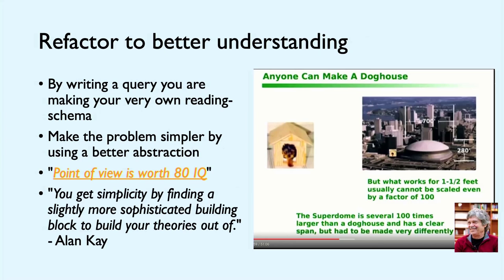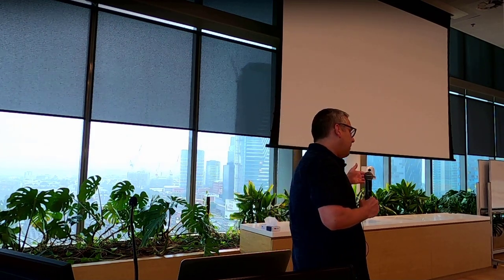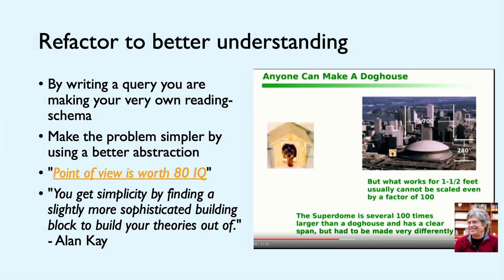Alan Kay is attributed with the quote 'A point of view is worth 80 IQ points' — not because you change your perspective and suddenly become smarter, but it allows you to do things on a completely different meaningful level. In one of his talks he says anyone can make a doghouse — you don't need to be an architect for that. But if you try to do something like the Superdome, that doesn't work out if you don't have a proper idea of how you construct things and how they work together. As with our language learning analogy: on a very low level you get along with basic intuitive things, but if you want to step up and make it larger, faster, more distributed — if you want to scale — you need a better point of view.